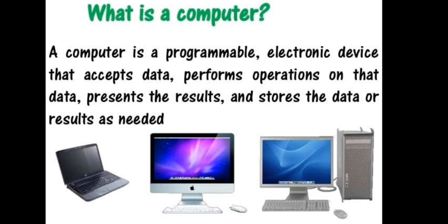When a user enters data into the computer system, the computer performs different calculations on that data and gives us an output — that output is called information. We store that information in different folders and files. So basically, the main purpose of a computer system is to perform calculations on data and convert it into useful information.